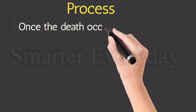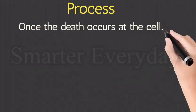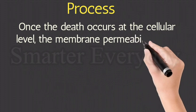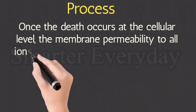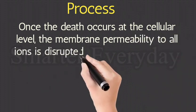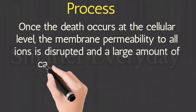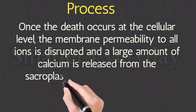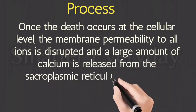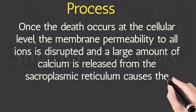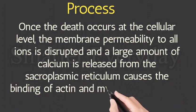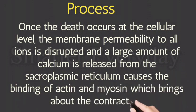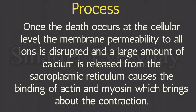Process: Once death occurs at the cellular level, membrane permeability to all ions is disrupted and a large amount of calcium is released from the sarcoplasmic reticulum. This causes the binding of actin and myosin, which brings about muscle contraction.